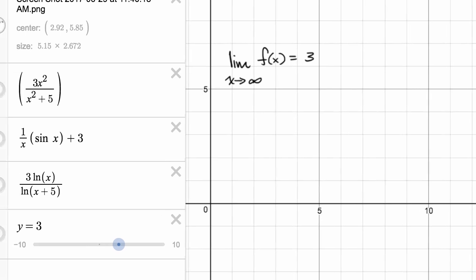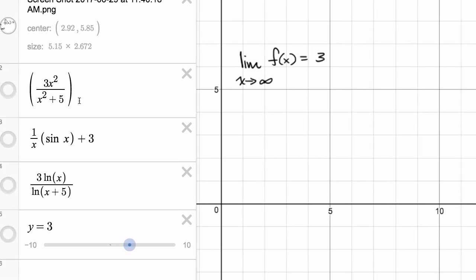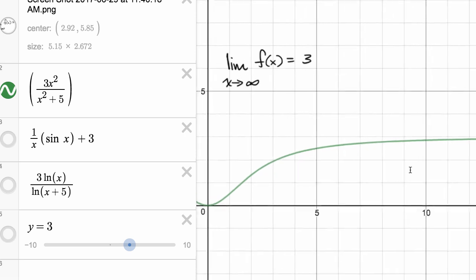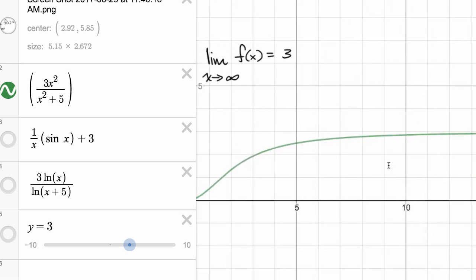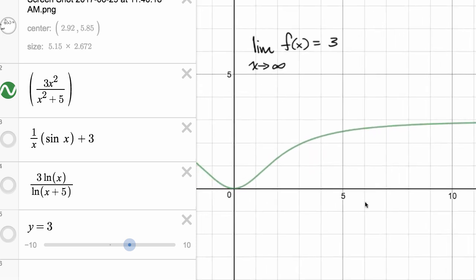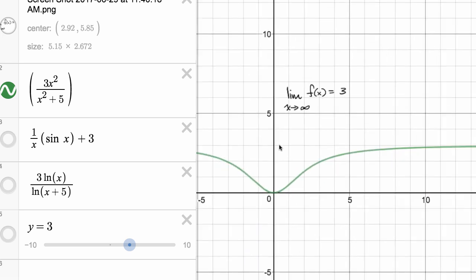So for example, we could look at this graph over here. And in other videos, we'll think about why this is the case, but just think about what happens when you have very, very large x's. When you have very, very large x's, the plus five doesn't matter as much, and so it gets closer and closer to three x squared over x squared, which is equal to three. And you could see that right over here. It's graphed in this green color. And you can see, even when x is equal to 10, we're getting awfully close to three right over there. Let me zoom out a little bit so you see our axis. So that is three.